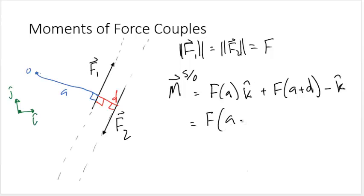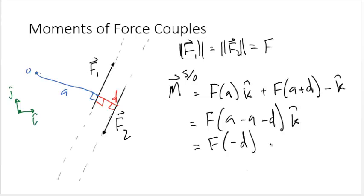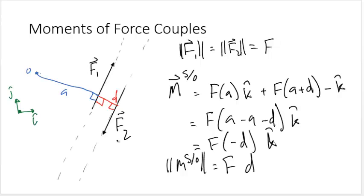Simplifying this, we find that the moment is F times (a − a − d) k̂. What we find is that the distance from point O to F1 does not matter, and the moment is F times negative d k̂. The magnitude of the moment is simply F times the perpendicular distance between the two forces.